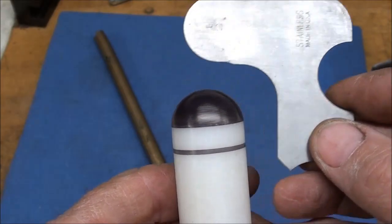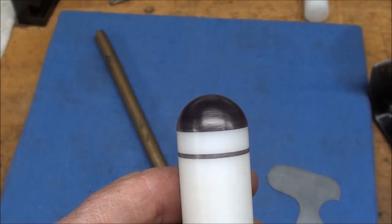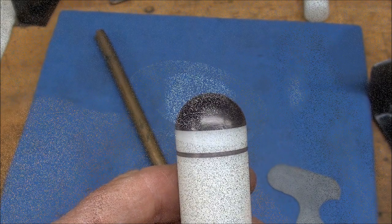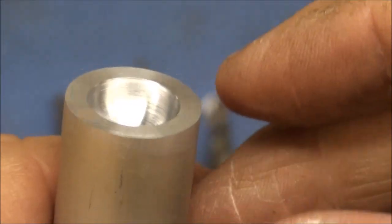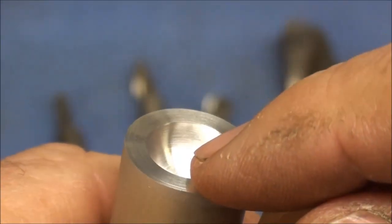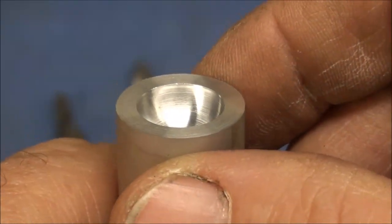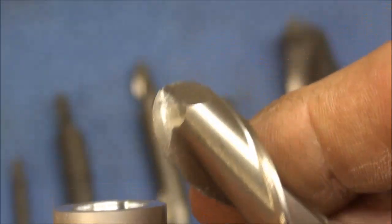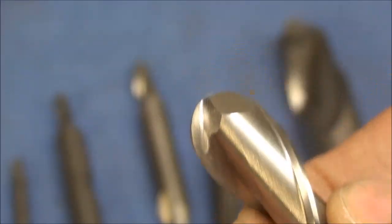And that's the third method of how to turn a radius. From time to time you may need to machine an internal radius or a concave radius and in order to do that the easiest way would be to use a ball end mill.